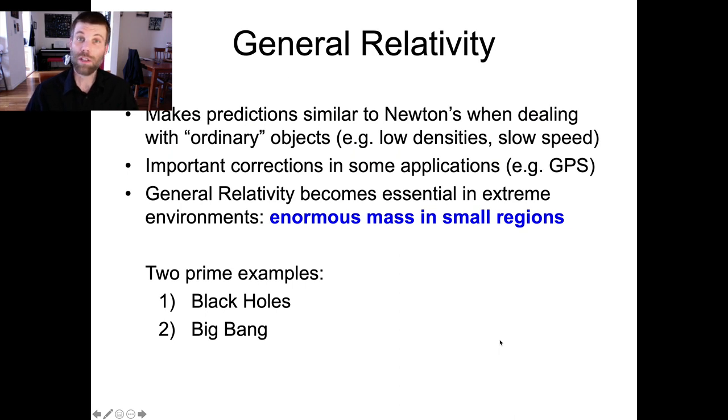General relativity does a really good job across a wide variety of topics. In what we call the weak field limit, when the force of gravity is low and objects are traveling slowly, general relativity basically reduces to Newton's theory of gravity, with predictions very similar to Newton's.